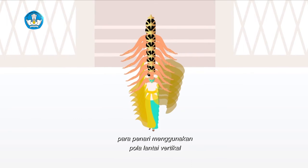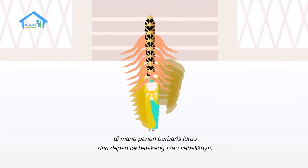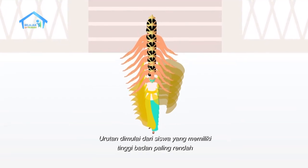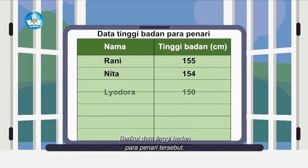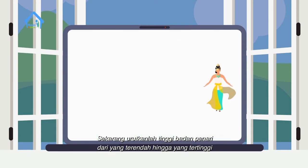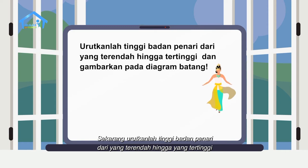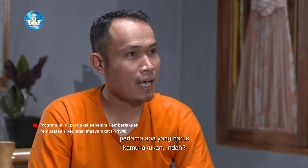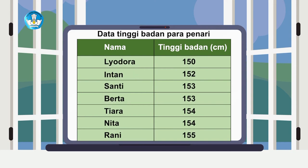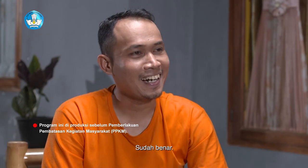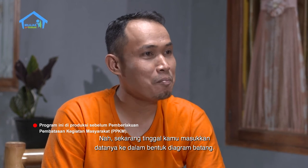Para penari menggunakan pola lantai vertikal, di mana penari berbaris lurus dari depan ke belakang atau sebaliknya. Urutan dimulai dari siswa yang memiliki tinggi badan paling rendah hingga tertinggi. Berikut data tinggi badan para penari tersebut. Sekarang, urutkanlah tinggi badan penari dari yang terendah hingga yang tertinggi dan gambarkan pada diagram batang. Untuk membuat diagram batangnya, pertama apa yang harus kamu lakukan, Indah? Datanya harus diurutkan dulu dari yang terendah sampai yang tertinggi. Kalau diurutkan, datanya akan seperti ini.